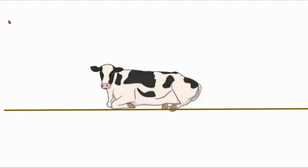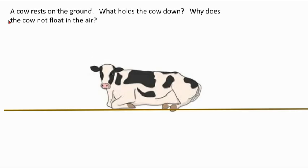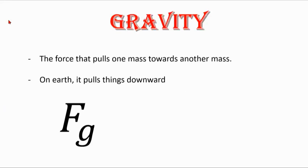So first of all, let's just kind of think about what forces are around us. Anything that's on the ground, like this cow is laying on the ground, why is the cow not floating in the air? What is causing it to stay on the ground? As you may have guessed, the answer is gravity.